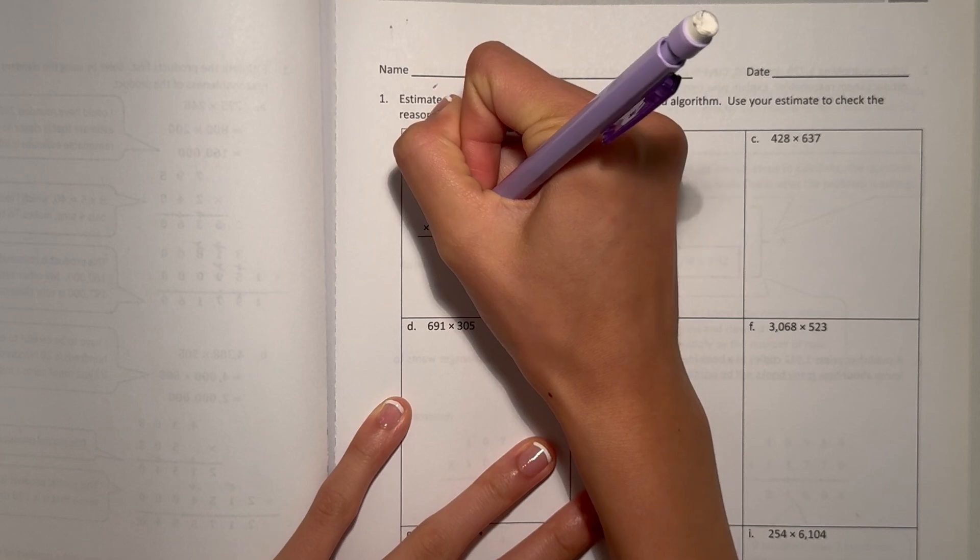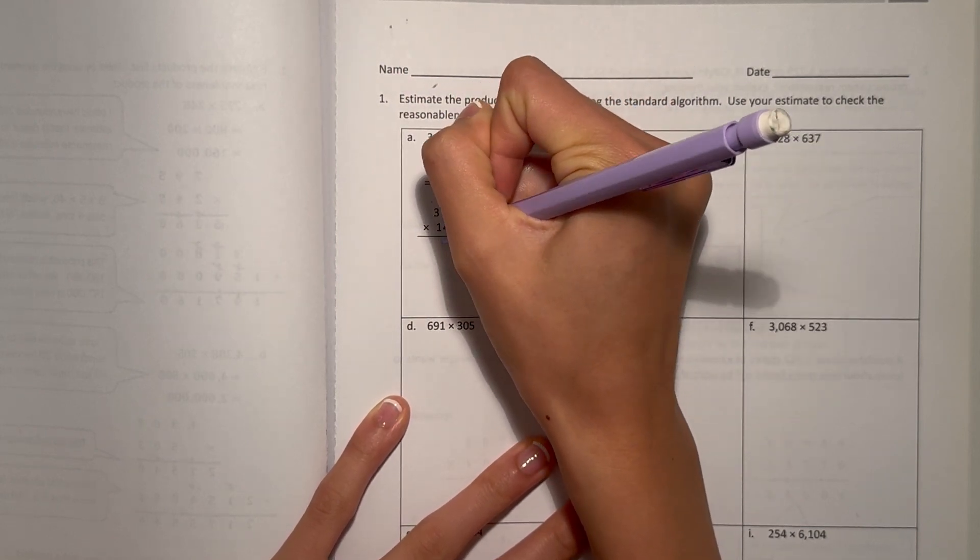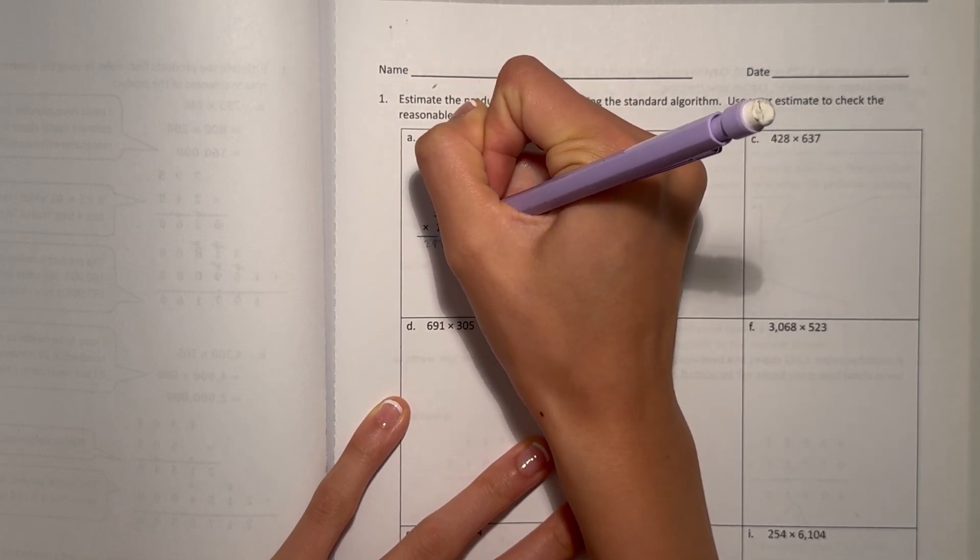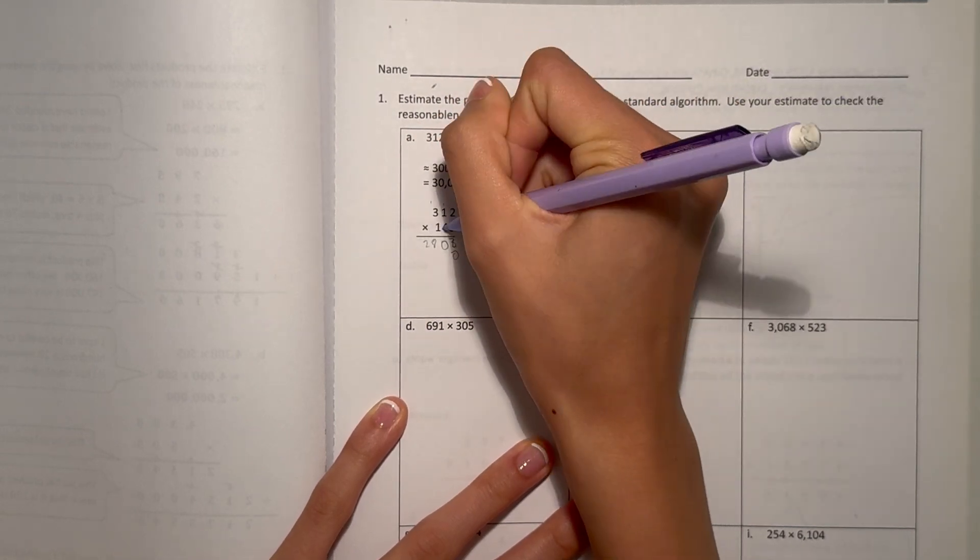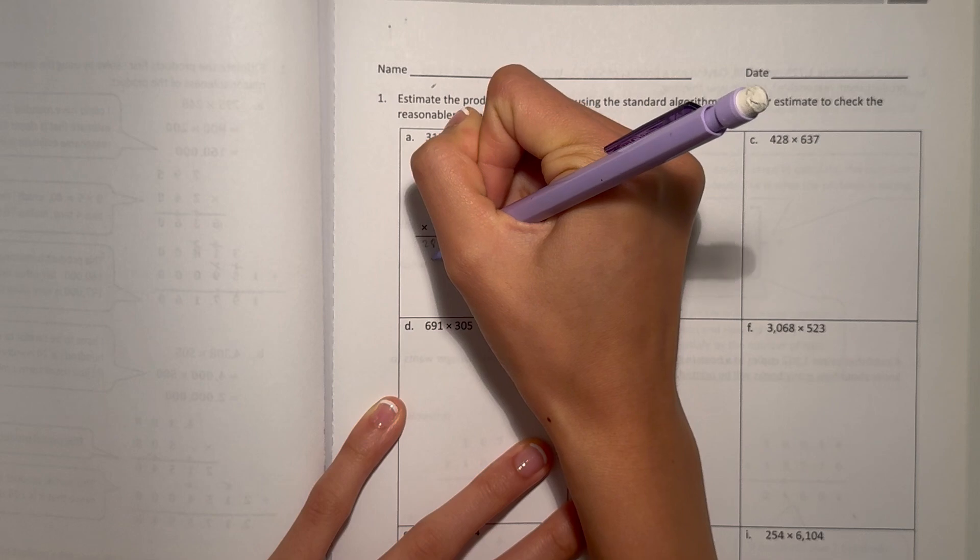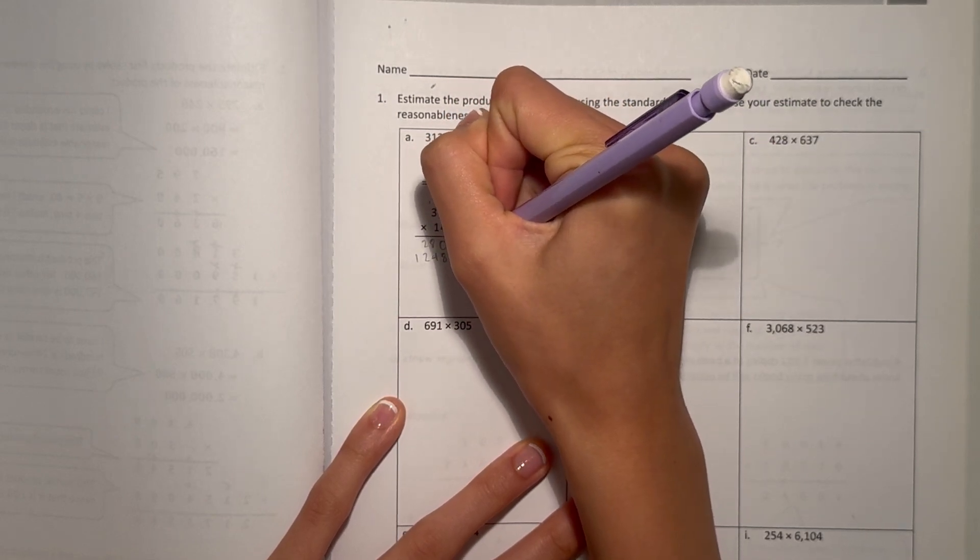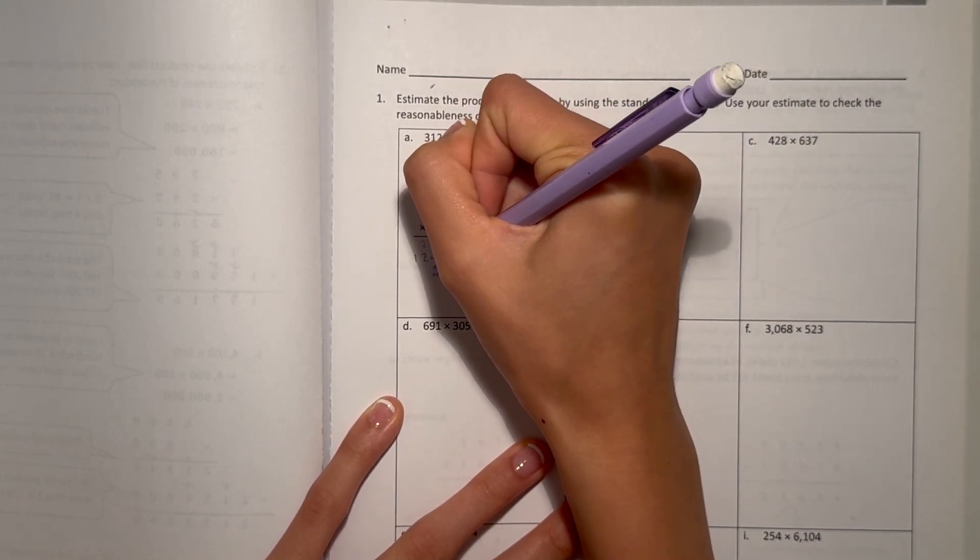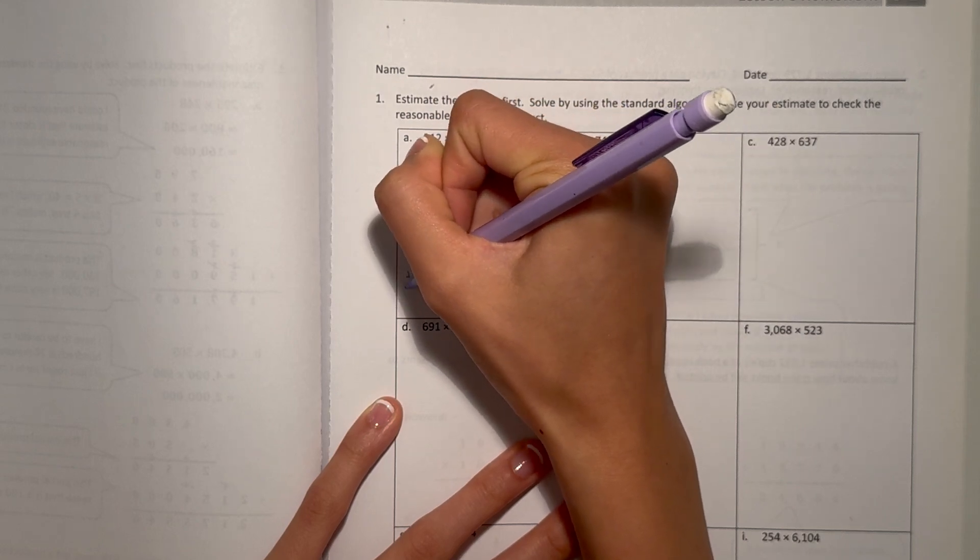2 times 9 is 18. 1 times 9 is 9, plus 1 is 10. And 3 times 9 is 27, plus 1 is 28. Now add a 0, because we're moving on to the tens place. 4 times 2 is 8. 4 times 1 is 4. And 4 times 3 is 12. Now add two 0s because we're in the hundreds place.